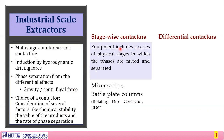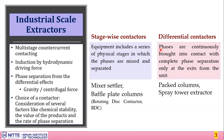In a stage-wise contactor, equipment includes a series of physical stages in which the phases are mixed and then separated. In a differential contactor, the two phases are continuously in contact throughout the equipment, and phase separation occurs only at the exit. Examples of stage-wise contactors include mixer-settler and baffle plate columns, as well as the RDC. Differential contactors include packed columns and spray tower extractors.